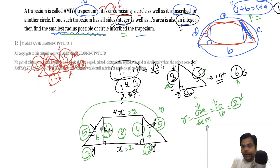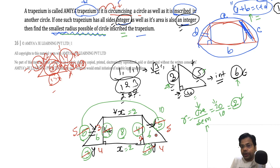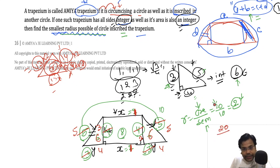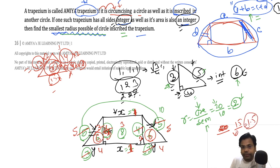Now let me change the values — instead of 3-4-5, I'll try 5-4-3, meaning the slant side remains 5, but now the base extension is 4 and the height is 3. The area of each side triangle is 6. The top is 8, adjusting the summation: area of the rectangle is 1 times height, total area remains around 20, but now height is 3. Semi-perimeter is 10. So the in-radius becomes 1.5.